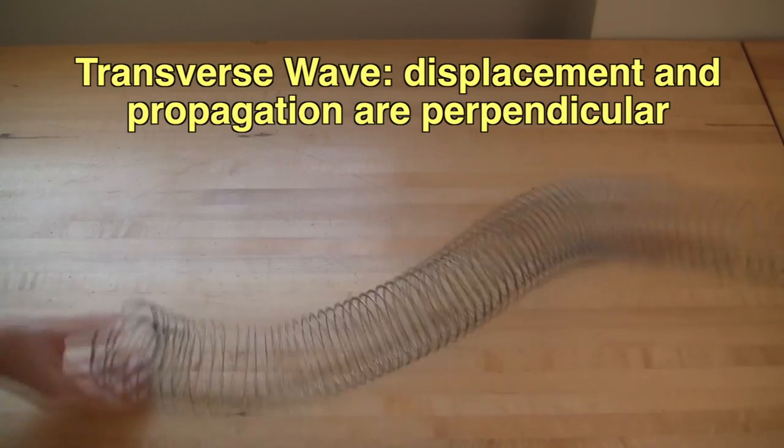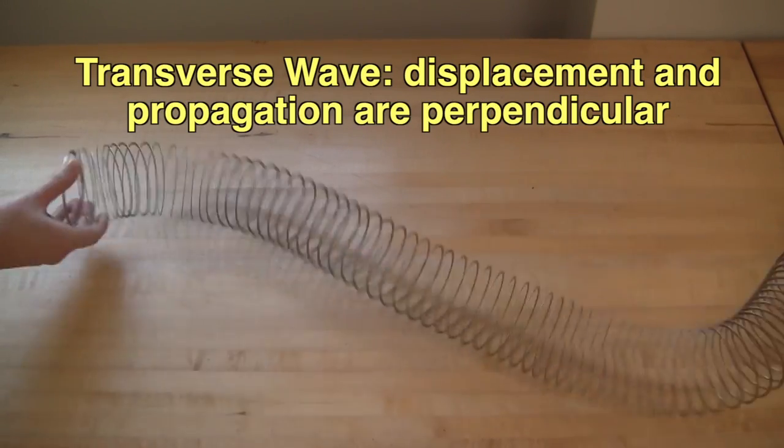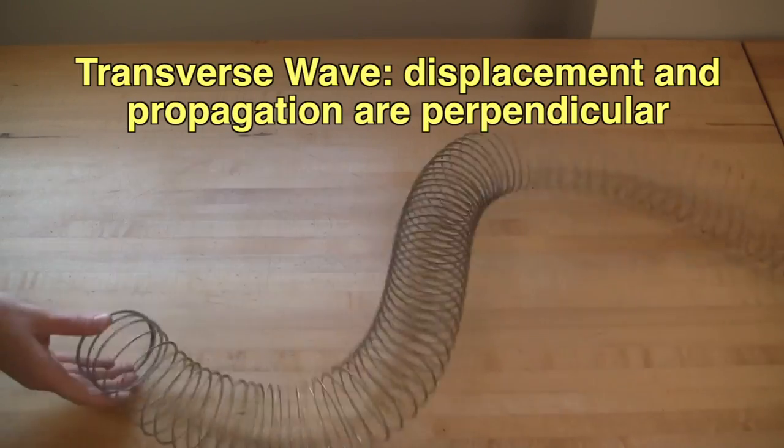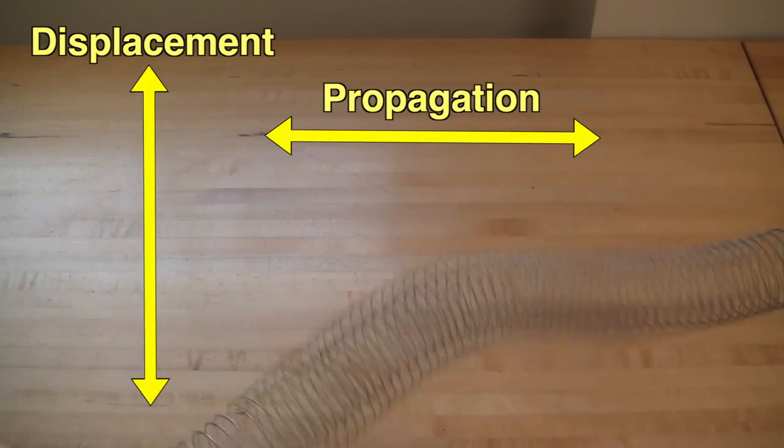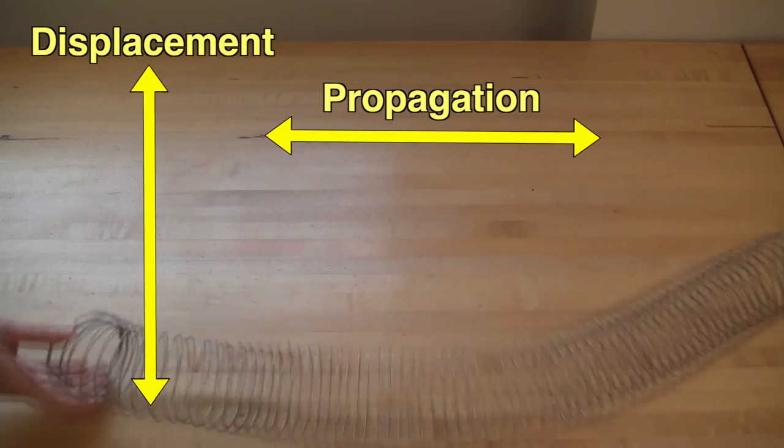For transverse waves, the propagation of the wave is perpendicular to the displacement of the medium. The slinky moves up and down while the pulse travels back and forth to the left and right.